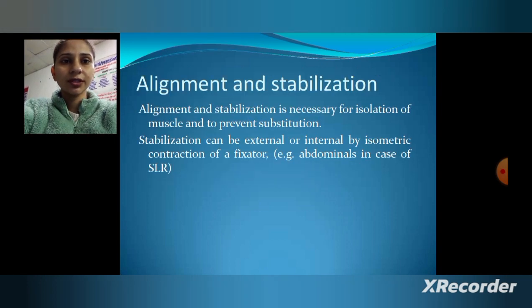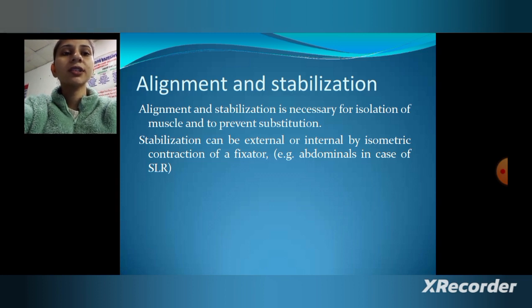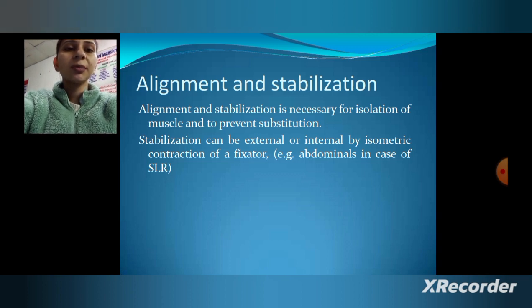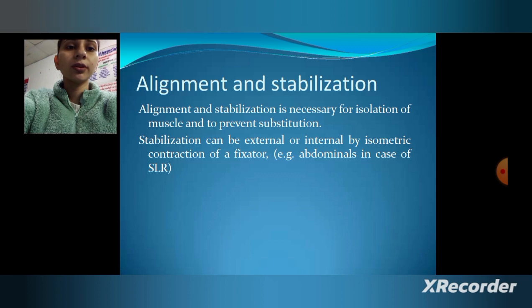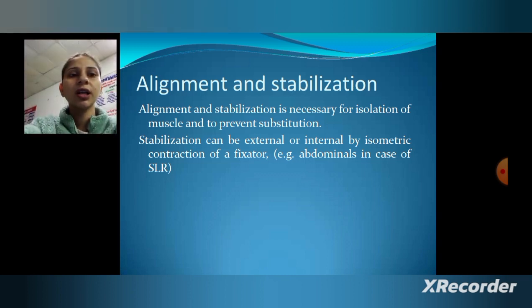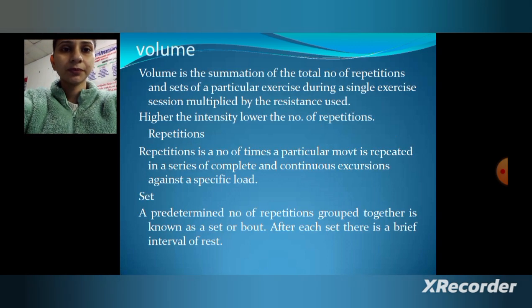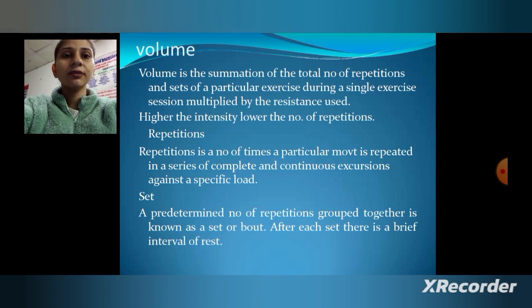Other adaptations include increased vascularization, alignment, and stabilization. Alignment and stabilization are necessary for isolation of a muscle and to prevent substitution. Stabilization can be external or internal by isometric contraction of the fixator — for example, the abdominals in case of SLR.